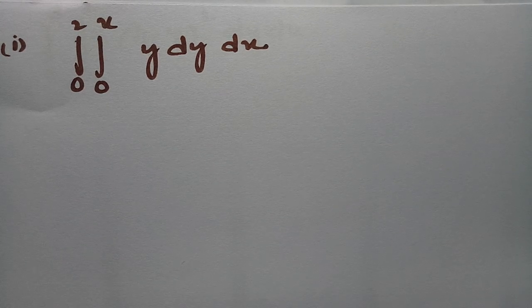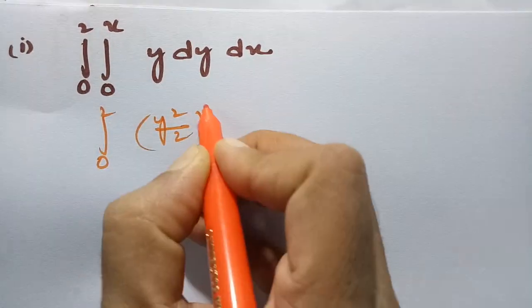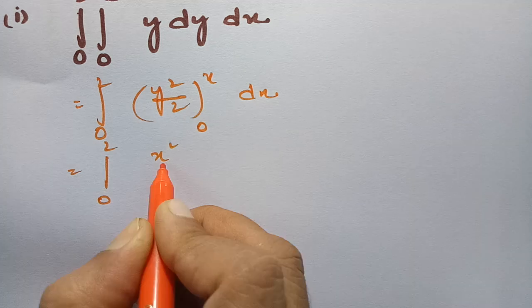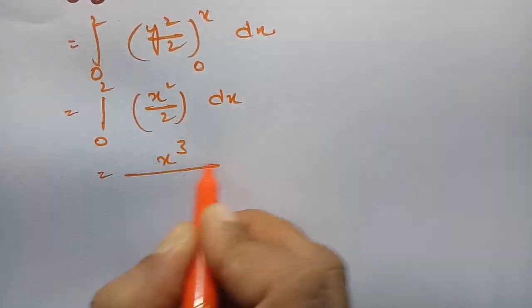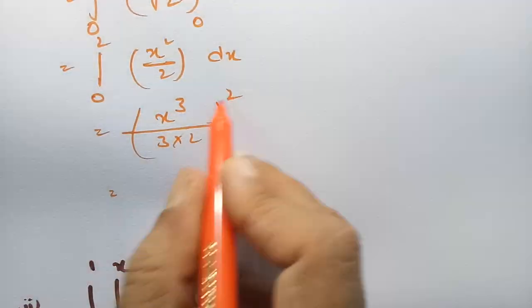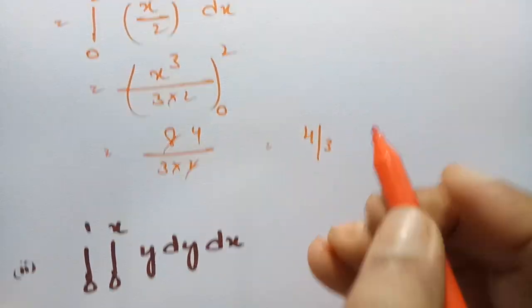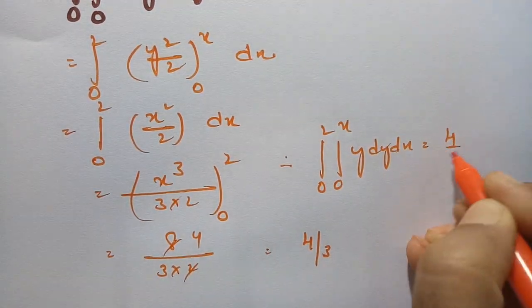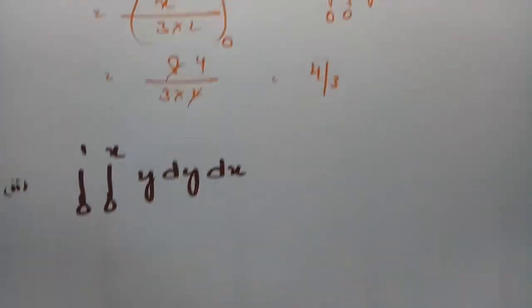The next problem: integral from 0 to 2, integral from 0 to x of y dy dx. First integrate with respect to y: y²/2 between limits 0 to x gives x²/2. Then integrate with respect to x: x³/3 times 1/2 between limits 0 to 2 gives 8/3 times 1/2, so the answer is 4/3. Therefore the integral from 0 to 2, 0 to x of y dy dx equals 4/3.